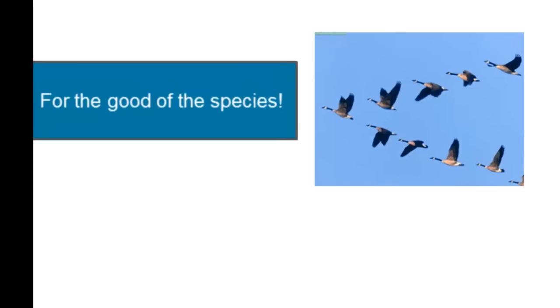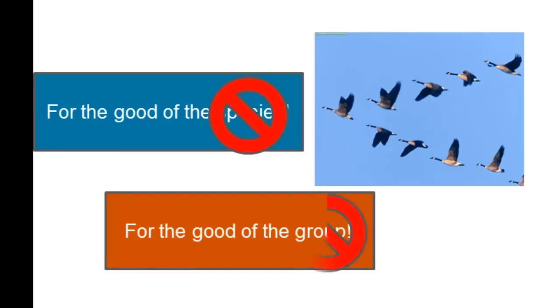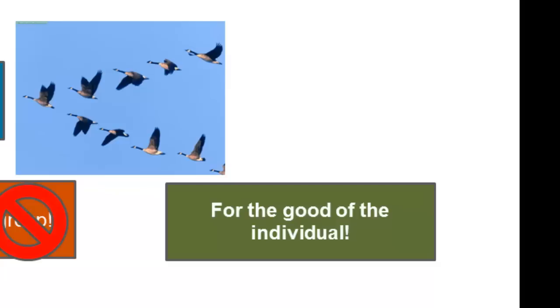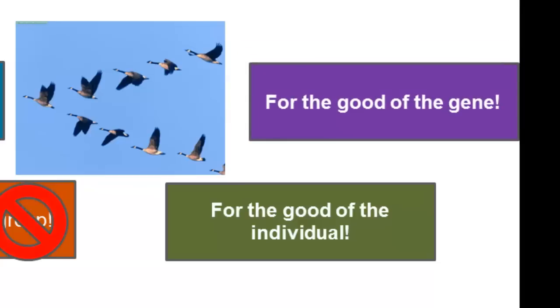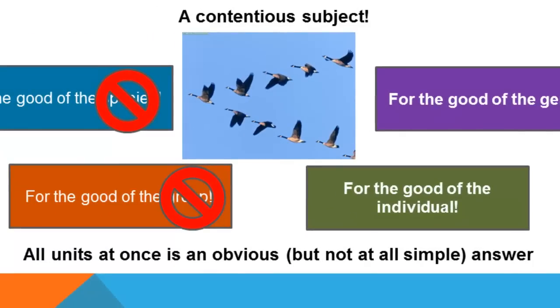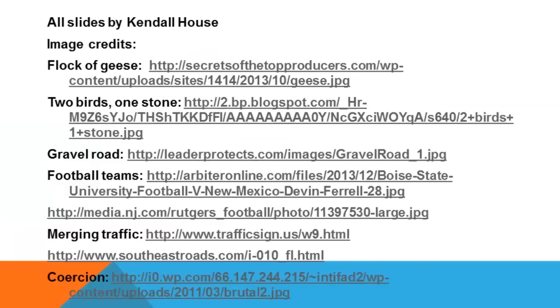So here's where we started: is selection operating for the good of the species? The neo-Darwinian argument is no. For the good of the group? Again, no. For the good of the individual? That's strongly embraced by neo-Darwinians. And for the good of the gene? That also became a popular argument. This is the units of selection debate — certainly not over, it remains a contentious subject. We'll be coming back to group selection, more recent defenses of that position, and the idea of multi-level selection, which, although an obvious answer, is not at all simple to defend. Thank you for listening.